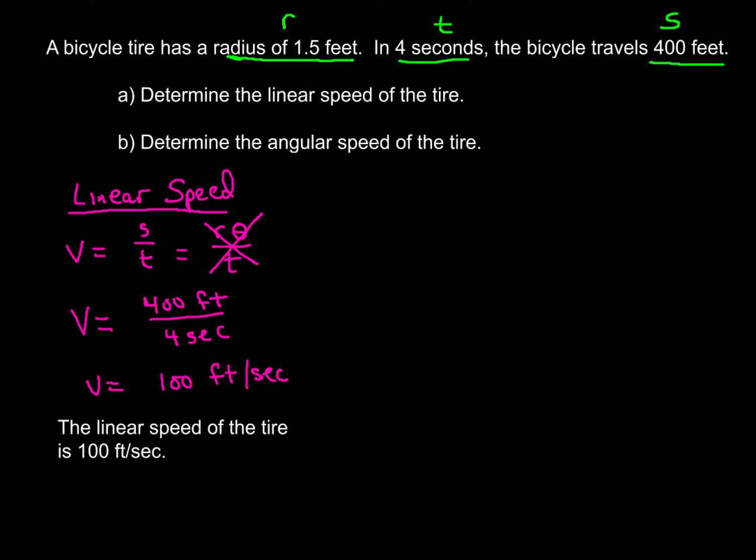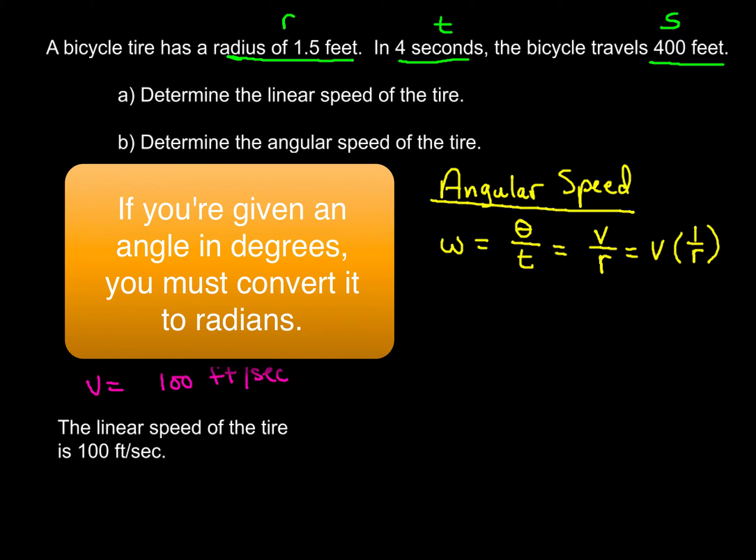Now angular speed is going to be a little bit different formula, and that's the thing with this kind of section. It's basically tons of formula stuff. Now to determine angular speed, again, we're going to have two different formulas that we can use. We're going to have omega equals theta over t, and theta is going to be our angle measured in radians, and that's a key thing. Theta's got to be in radians, can't be in degrees.